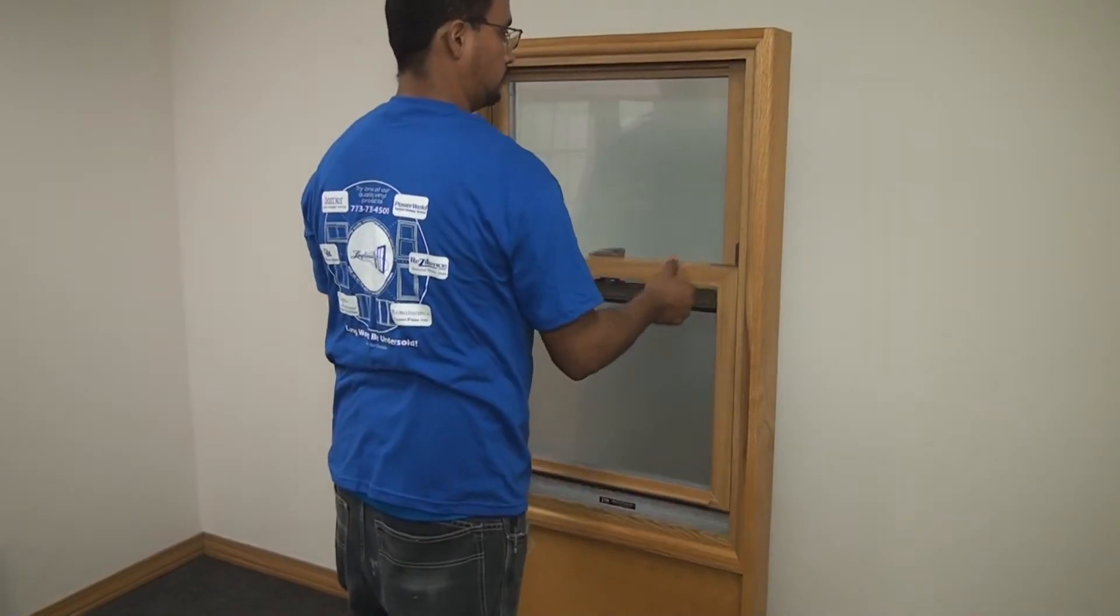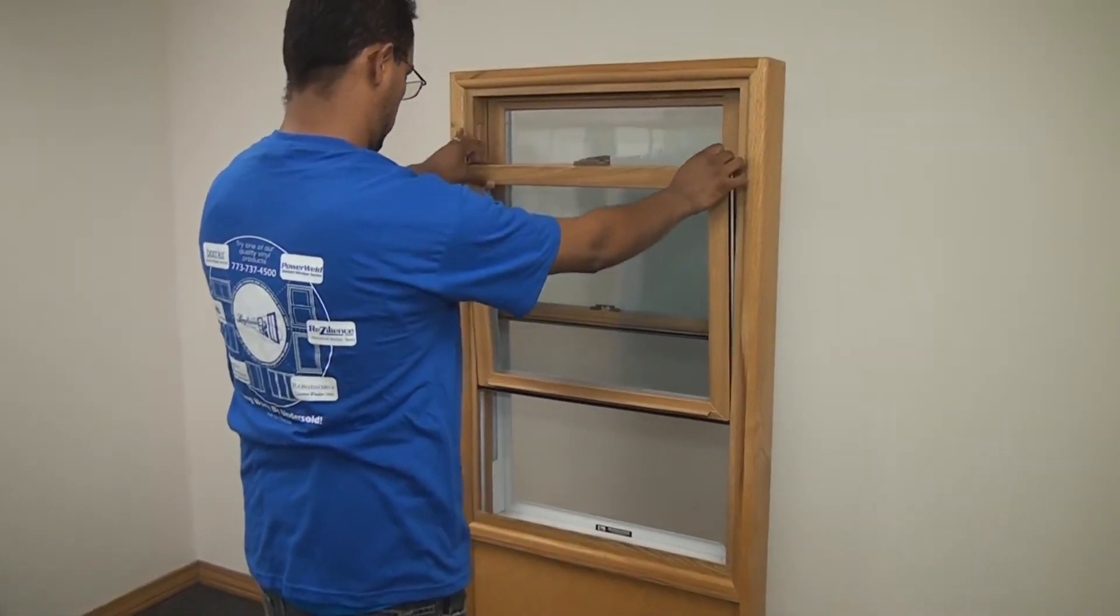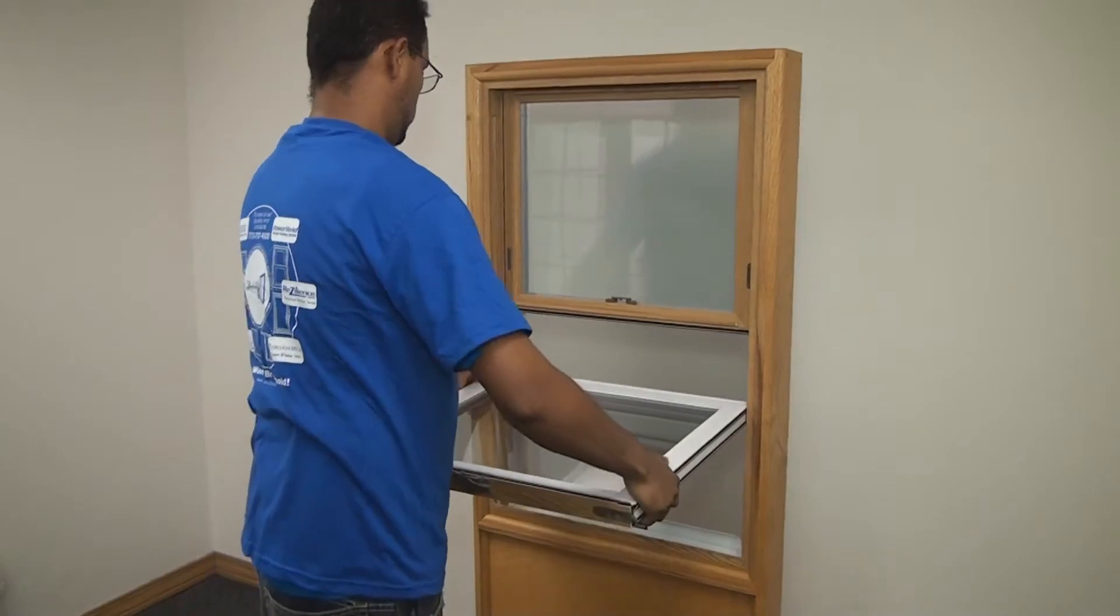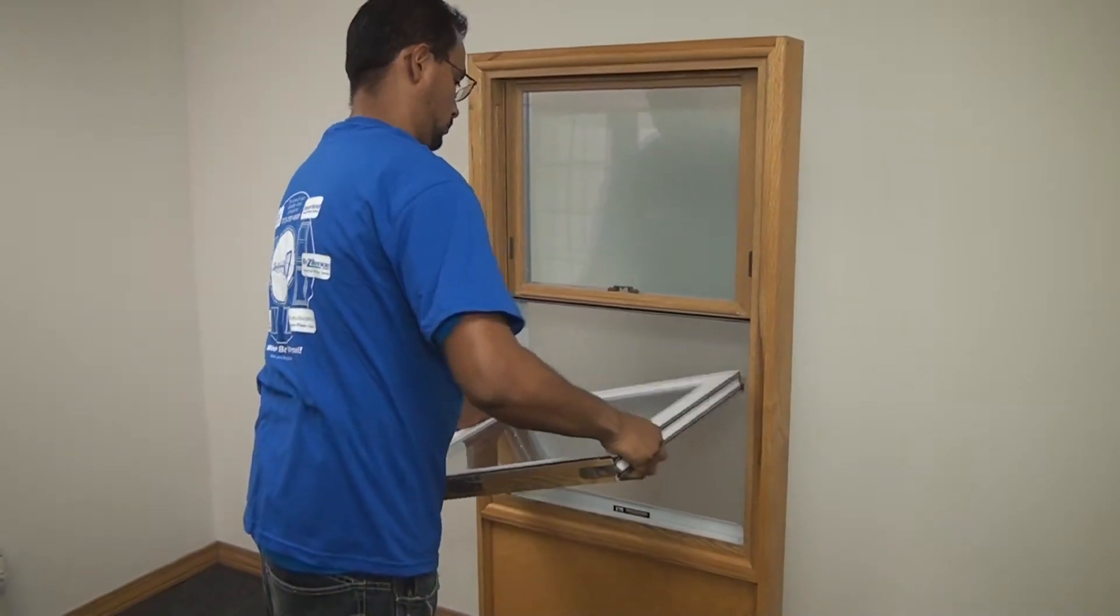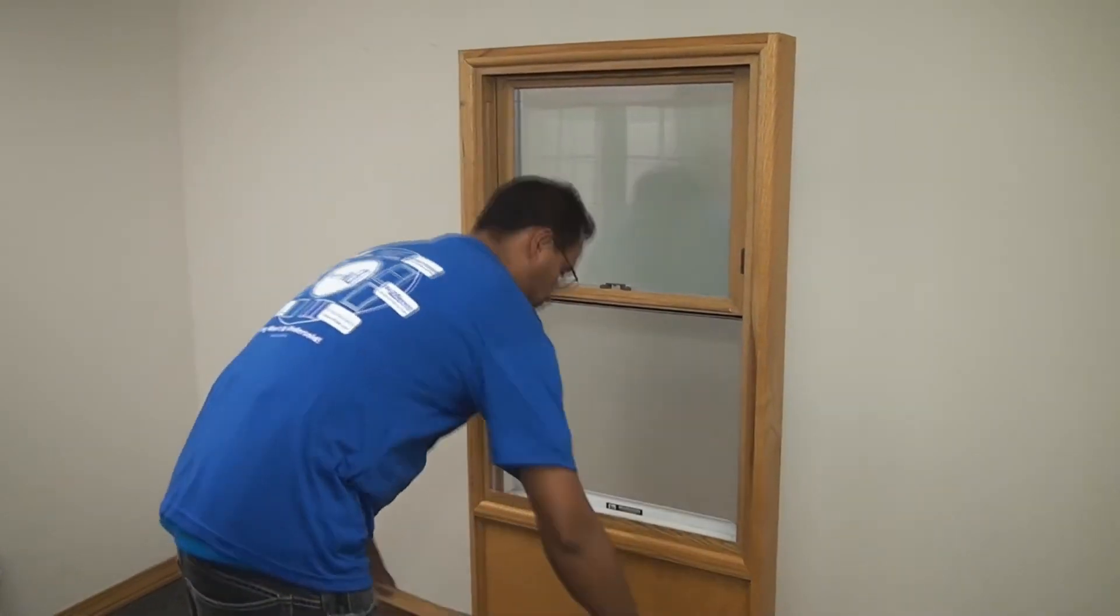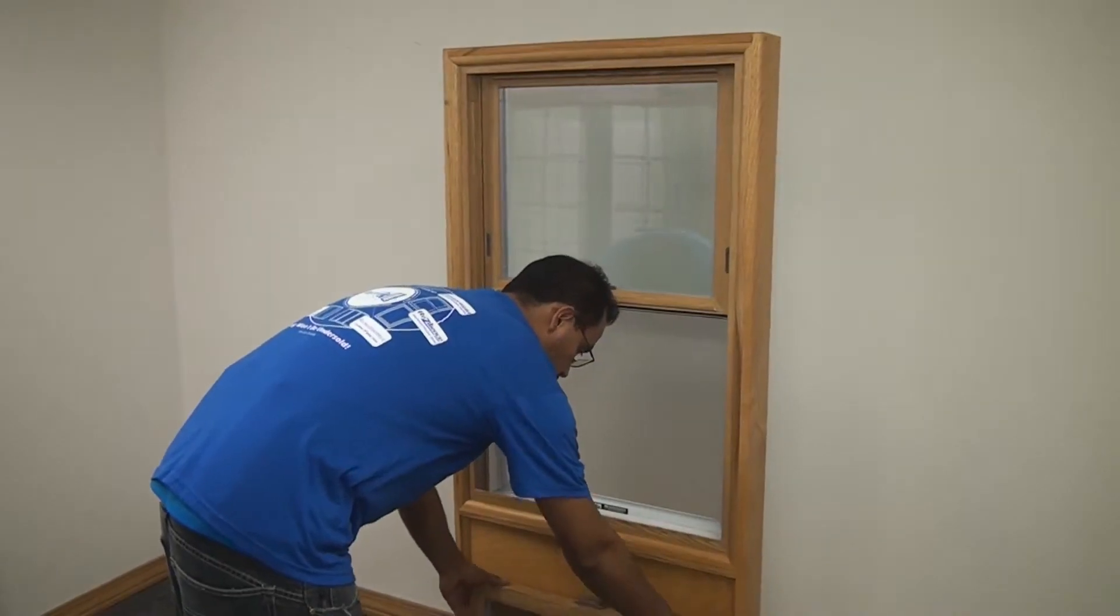First, unlock the double hung window. Lift the bottom sash up and pull the sash in towards you. To remove the sash, push down on one side and pull up on the other side and the sash will pop out of place.